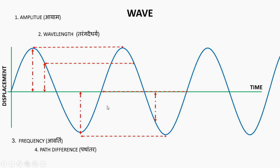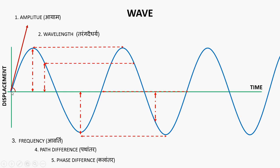Next is path difference. Path difference is the difference in the paths traveled by any two particles — the difference between the distances traveled by both of them. Similarly, the last definition is phase difference, or kala antar. At any given time, the direction of the wave is shown by its tangent or the perpendicular to it. If we find the difference in the directions of the wave at any two points or two times, that will be phase difference.